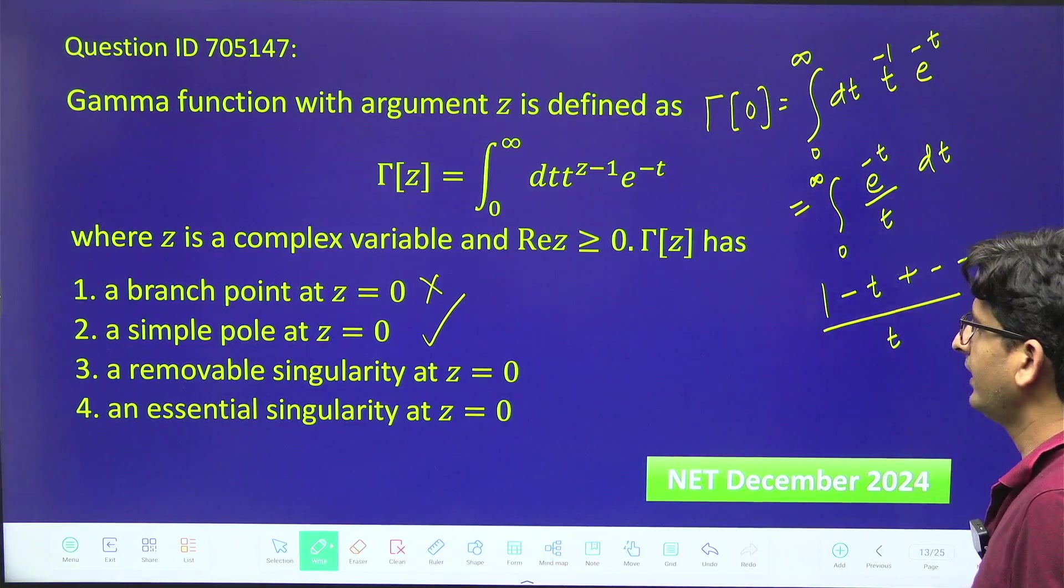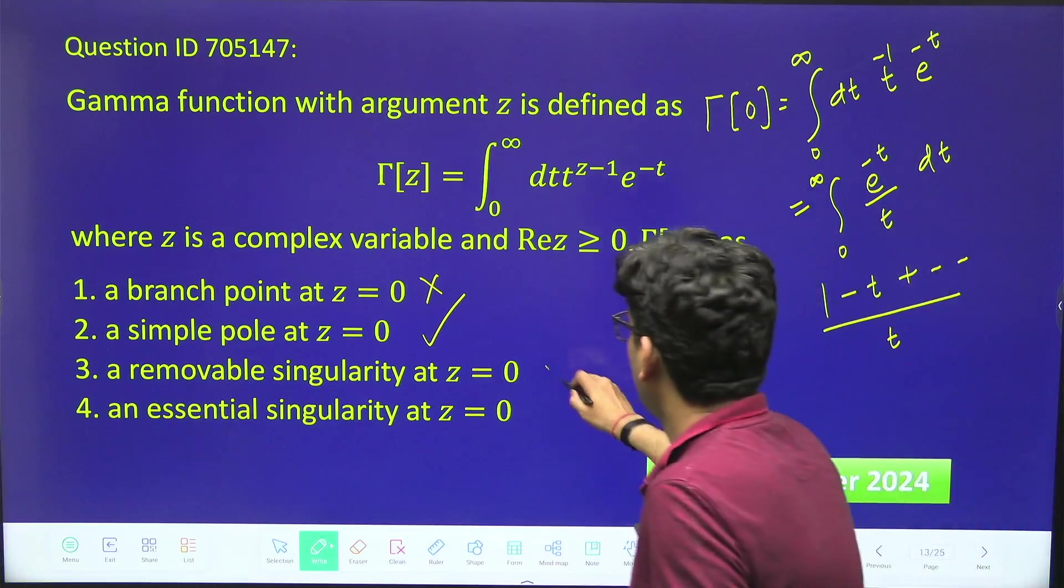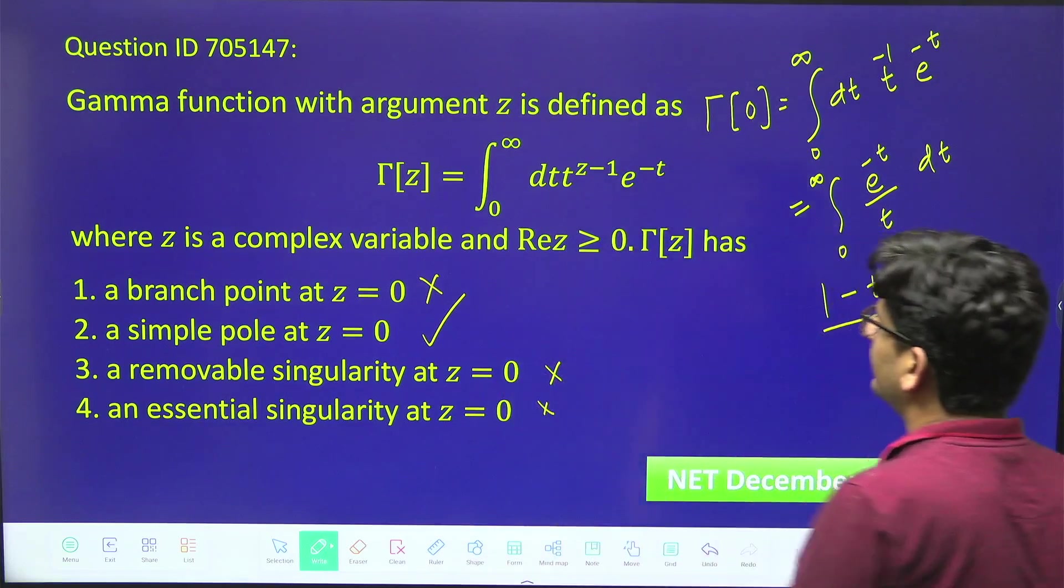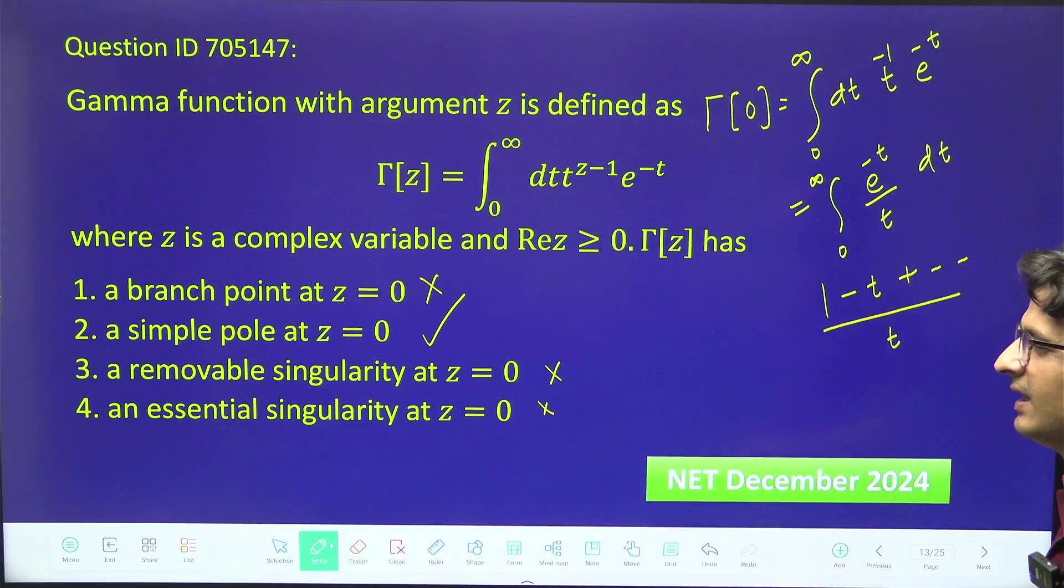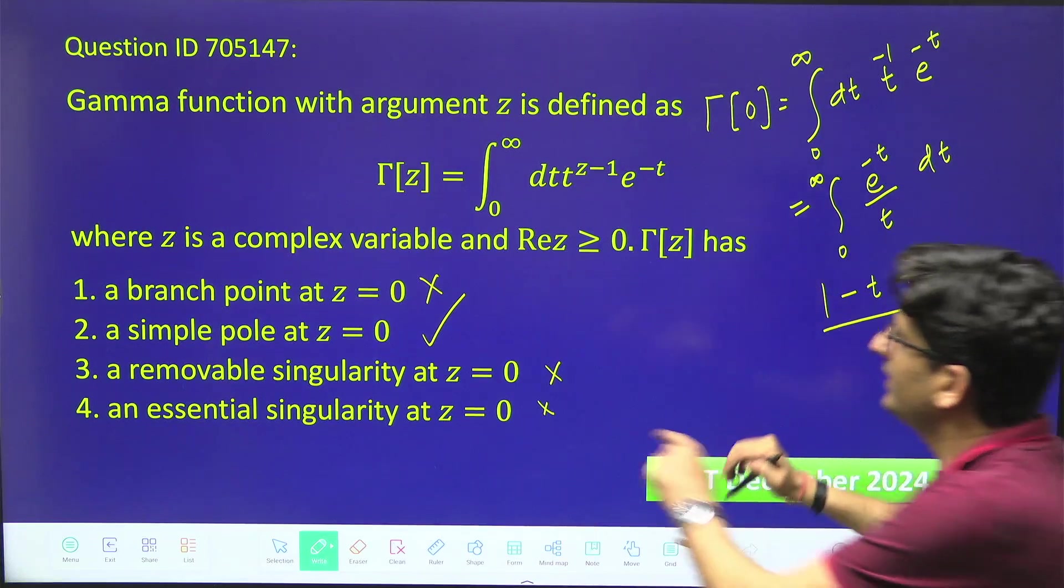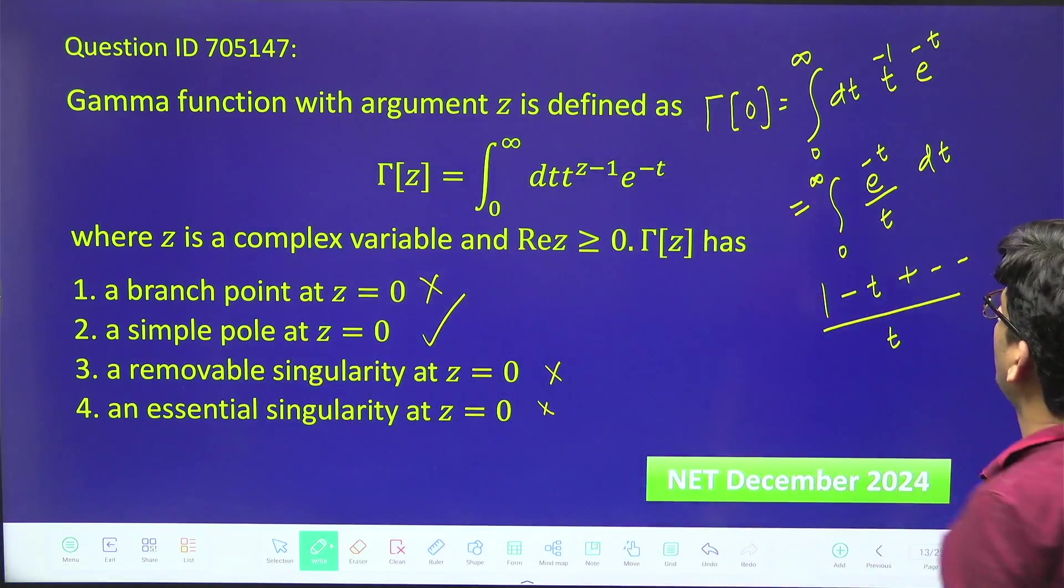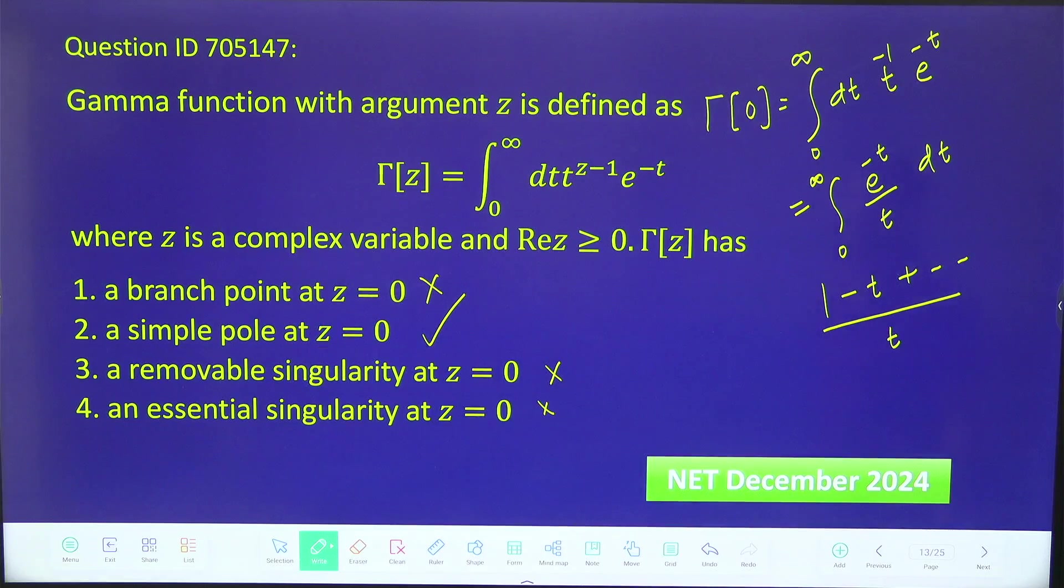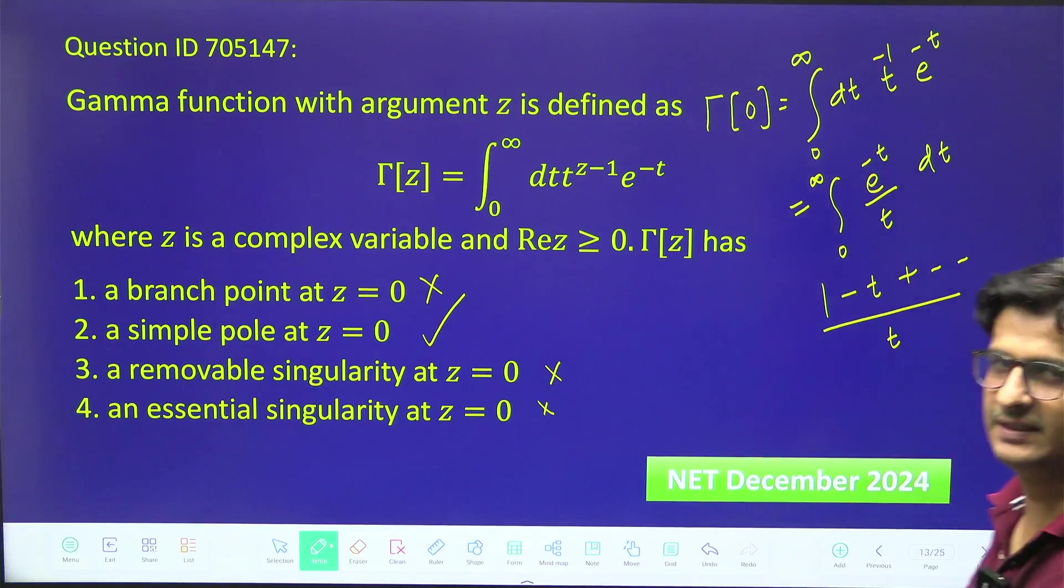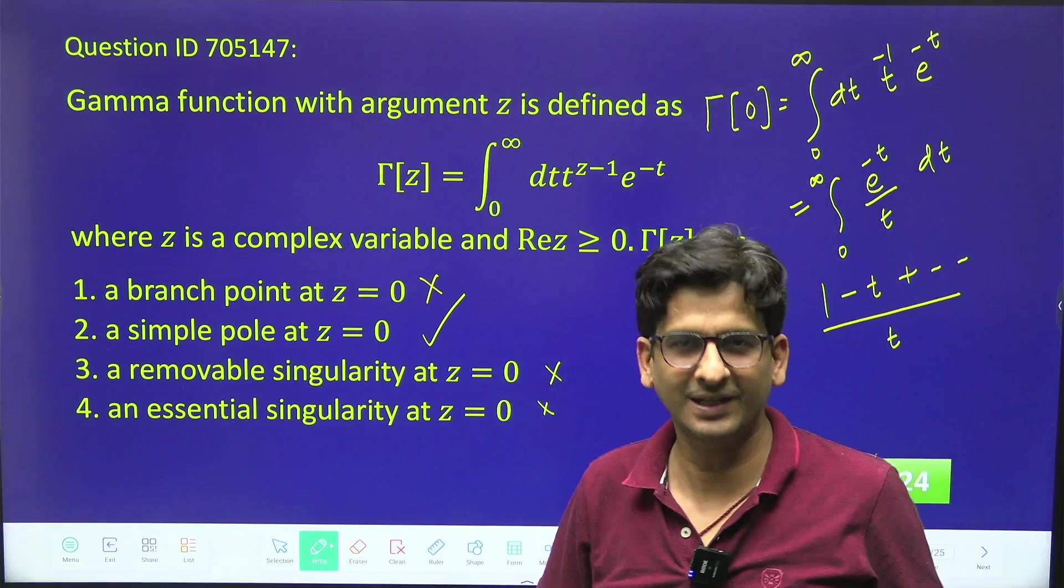So this is wrong, this is wrong, this is correct. Sometimes the question is very easy; they have just changed the format. If they are saying what is happening at z equals 0, check the function, what does the function look like at z equals 0, and then immediately you can see the singularity. Thank you so much.